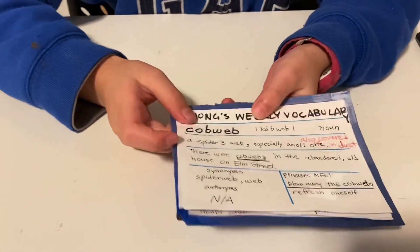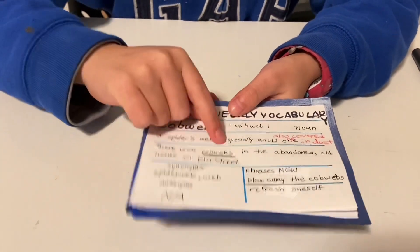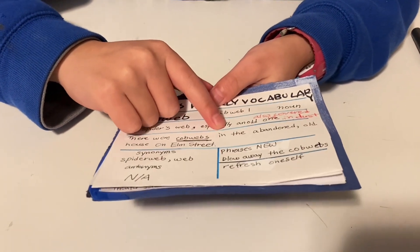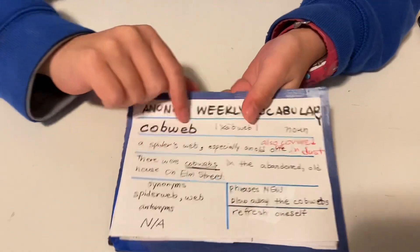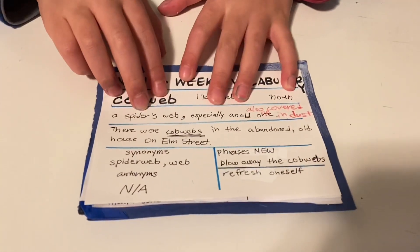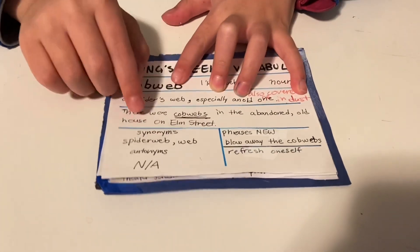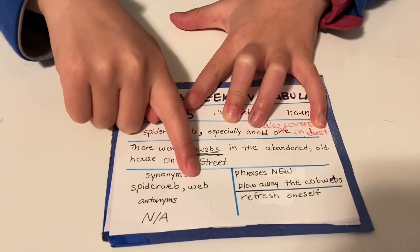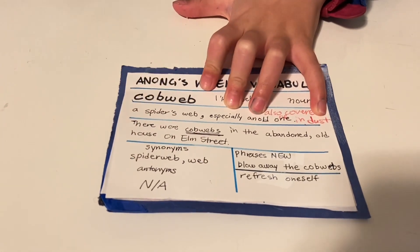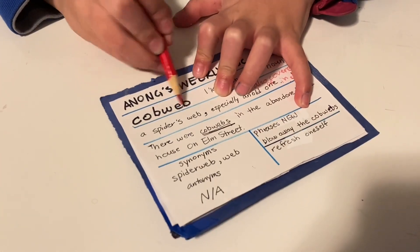There's also an example sentence: 'There are cobwebs' — the word is always underlined — 'in the abandoned house on Elm Street.' And we have some synonyms: spiderweb and web.